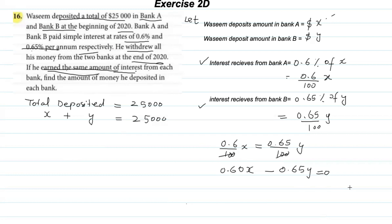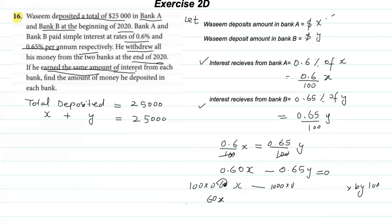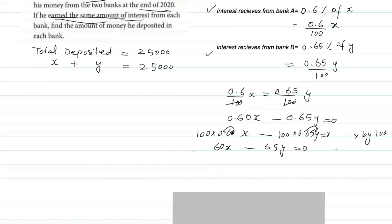Multiplying both sides by 100 cancels the denominators. When multiplying 0.6 by 100, the decimal shifts two digits right because 100 has two zeros, giving 60x. Similarly 0.65 × 100 = 65y. So equation two becomes: 60x − 65y = 0. Dividing by 5 simplifies this further.